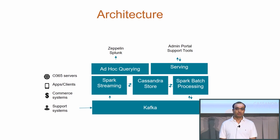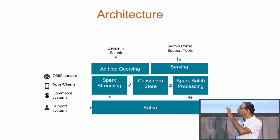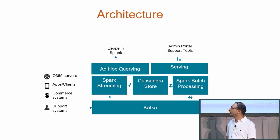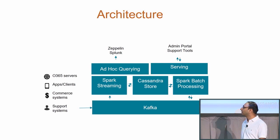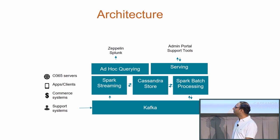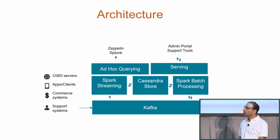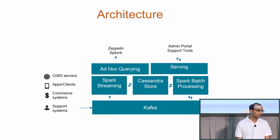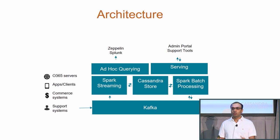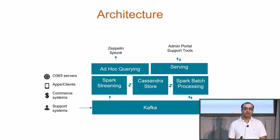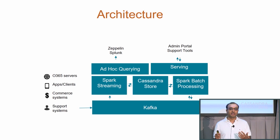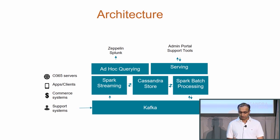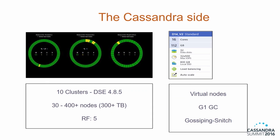This is how our architecture looks. On the left you see all the data producers — Office 365 servers and signals coming from Android or iPhone clients. They are fed to Kafka, and we use Spark streaming to read from Kafka and write to Cassandra. We also use Spark for batch processing to do heavy insights generation. There are two ways we expose this data: one is through Zeppelin and Splunk for ad hoc exploration, and the other is REST APIs that power specific apps.